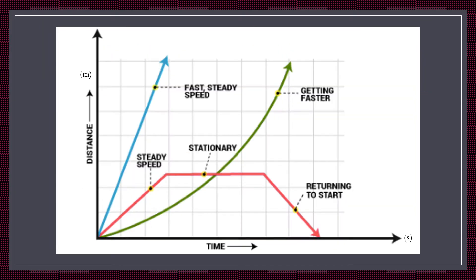This figure shows several types of distance-time graphs. The pink steady-speed graph starts from zero distance and increases uniformly over time. The blue graph has a larger slope, showing faster velocity. The pink stationary graph shows no change in distance over time, meaning the object is not moving.